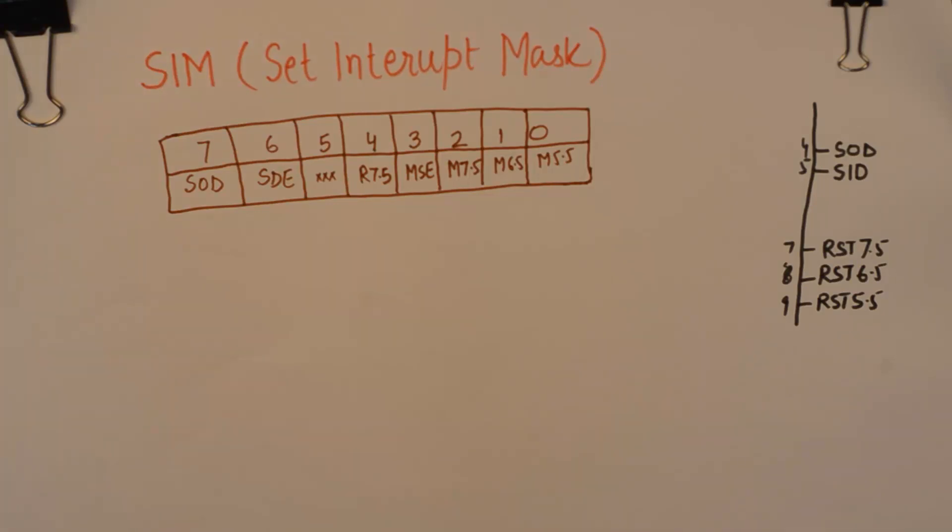using the SIM instruction. The SIM instruction abbreviates as set interrupt mask and this is used to mask the maskable interrupts of 8085.